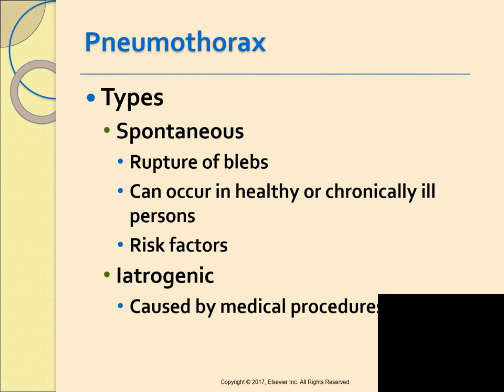Iatrogenic pneumothorax is due to a laceration or puncture of the lung during a medical procedure — for example, subclavian catheter insertion, pleural biopsy, or bronchial lung biopsy. Barotrauma from excessive ventilatory pressure during mechanical ventilation can also cause it. Any type of esophageal procedure or tearing during insertion of a gastric tube could allow air to enter from the esophagus and cause this problem.